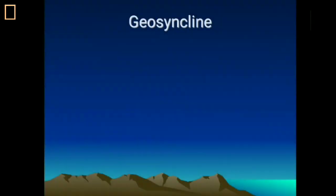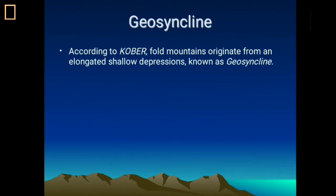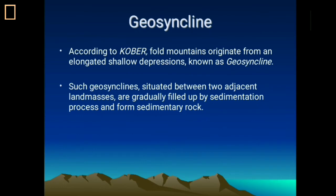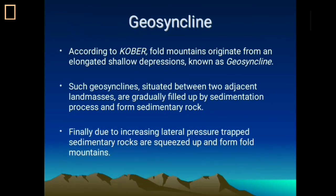Now, the geosyncline. The term was first given by the scientist Cobar. A geosyncline is a long, narrow, elongated, shallow depression. According to Cobar, these shallow synclinal depressions are bordered by two adjacent landmasses. Erosional agents erode these landmasses and the sediments are deposited in the shallow geosynclines. Due to continuous sedimentation, lateral pressure increases, the two adjacent landmasses come very close to each other, and fold mountains are formed. This is the basic concept of the geosyncline theory.